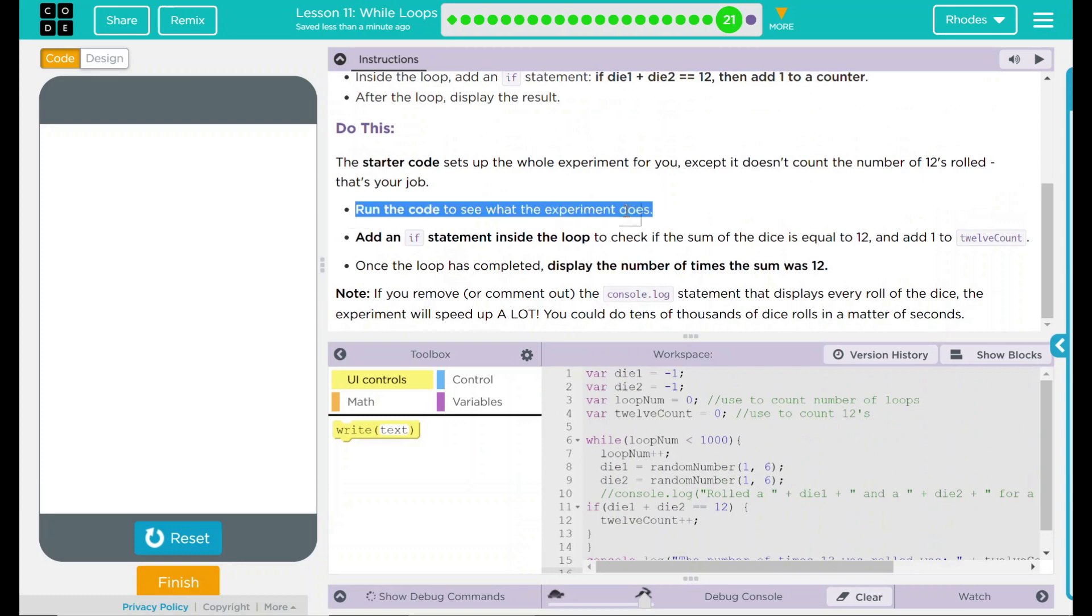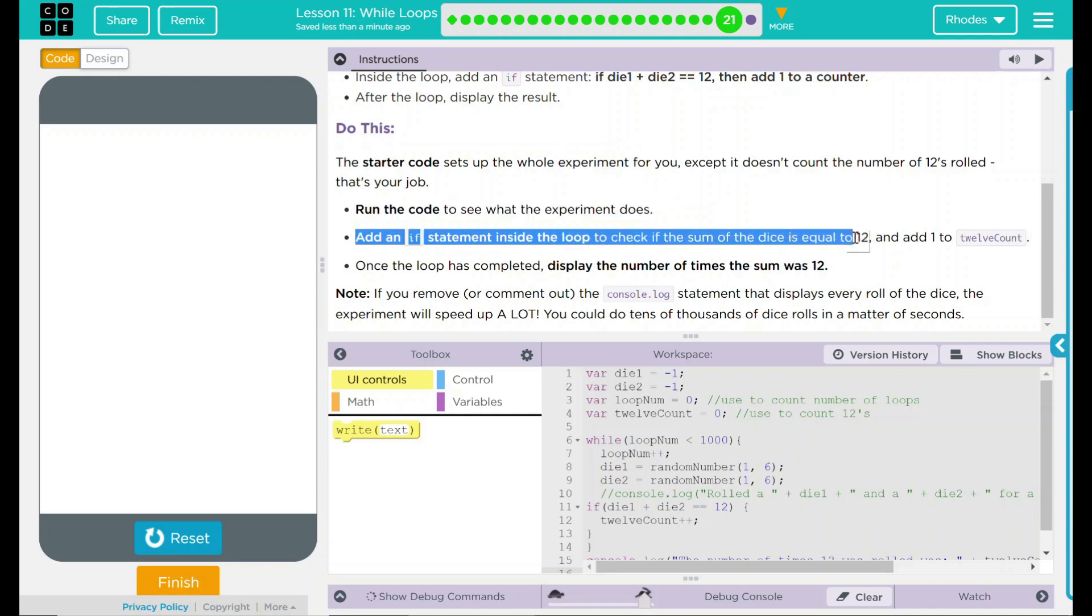Looking back up here, we ran the code to see what the experiment does, which just ran, fogged down our poor little computer. We added an if statement inside the loop to check the sum of the dice is equal to 12 and we added 1 to 12 count. Right there. Once the loop was completed, it displayed the number of times the sum was 12. I think that's all code.org wanted from us. Let's see if they want anything else. Nope.